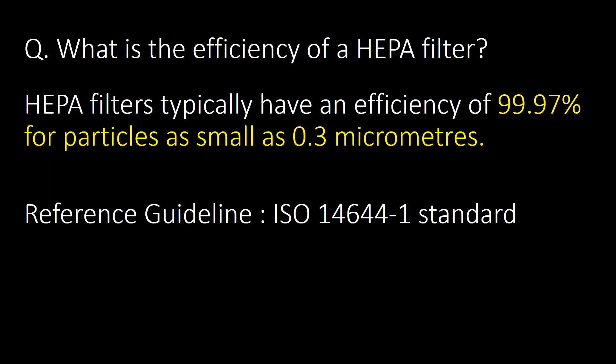What is the efficiency of HEPA filters? HEPA filters typically have an efficiency of 99.97% for particles as small as 0.3 micrometers. Reference guideline: ISO 14644-1 standards.